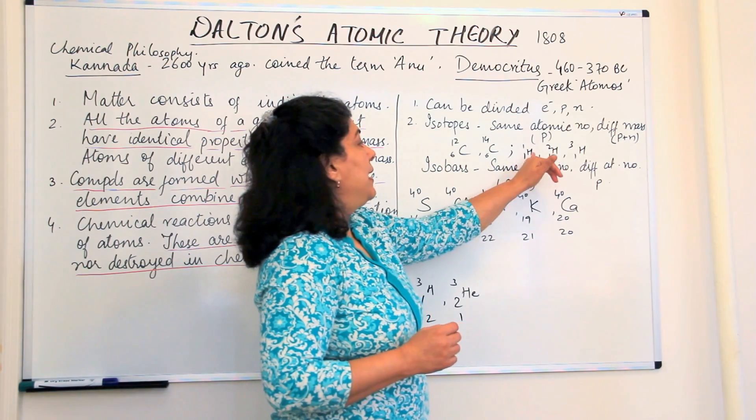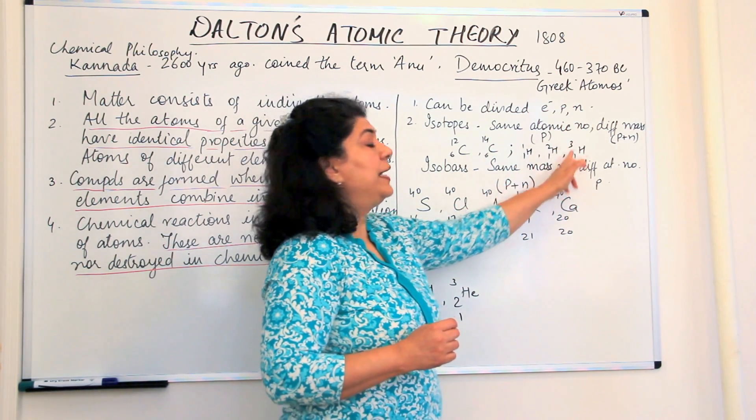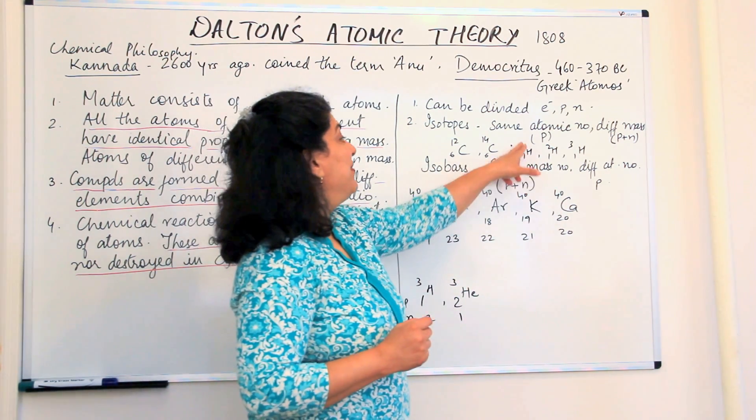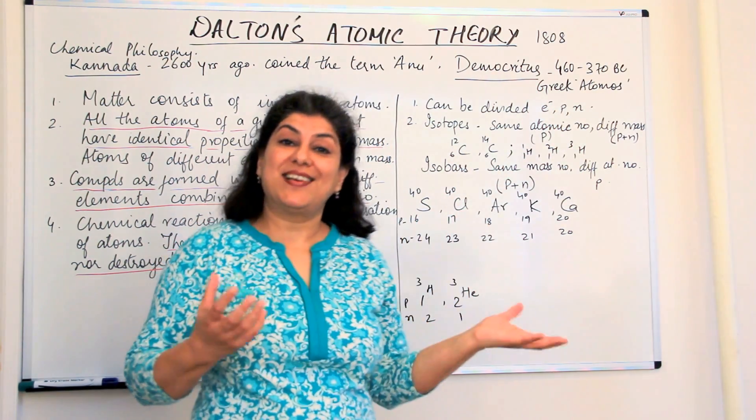Hydrogen, on the other hand, has three isotopes: hydrogen-1, hydrogen-2, and hydrogen-3. All of them have the same number of protons, that is one, but they have zero, one, and two neutrons due to which their masses are different.